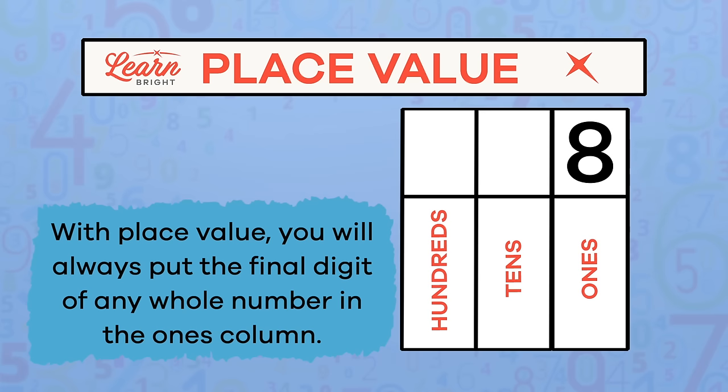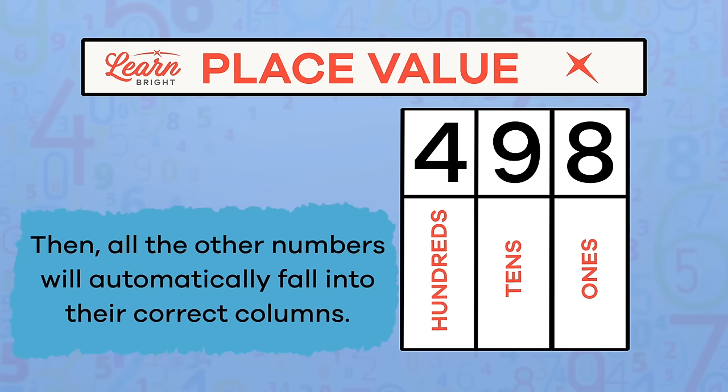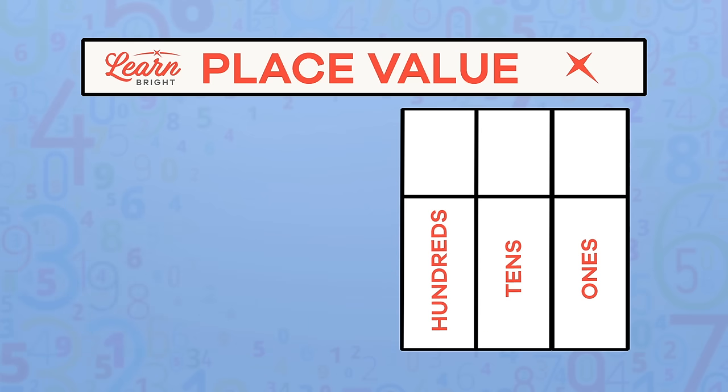With place value, you will always put the final digit of any whole number in the ones column. Then all the other numbers will automatically fall into their correct columns.